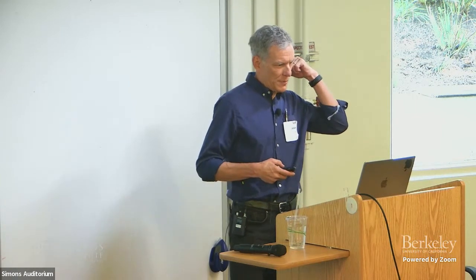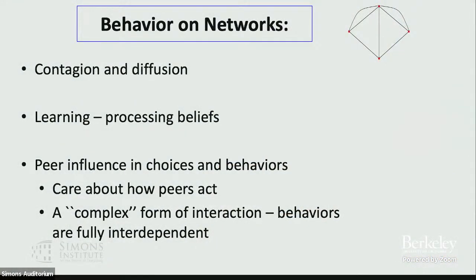Part of the reason social scientists are interested in networks and graphs is that understanding how people interact and understanding their decisions and behaviors depends heavily on understanding the patterns in which they interact. We've seen that this morning in terms of diffusion and contagion processes. We'll talk more tomorrow about learning processes. These are somewhat astrategic processes, whereas a lot of peer effects involve making predictions about how other people are going to behave.